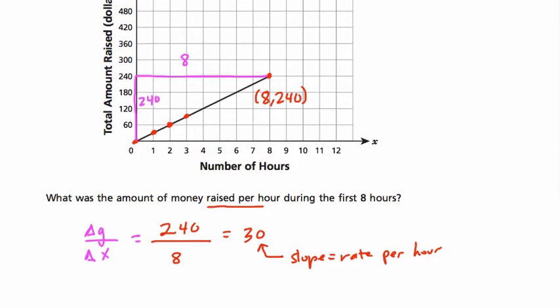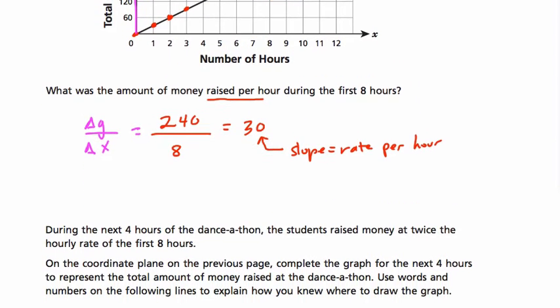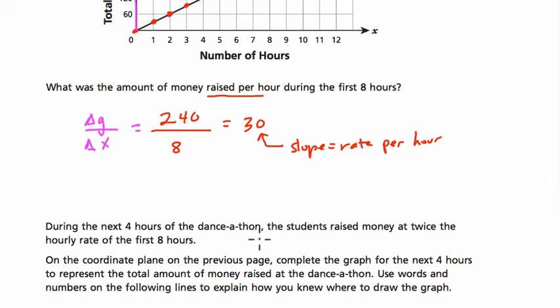Then there's an extension problem here. They want to know, during the next four hours of the dance-a-thon, students raise money at twice the hourly rate of the first eight hours. So first, I'm just going to make a note here, because if we were at 30 before, now that means our rate is now equal to $60 per hour.